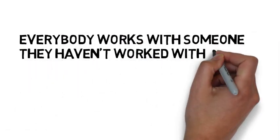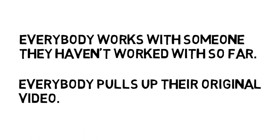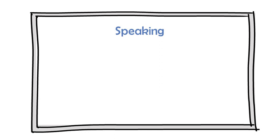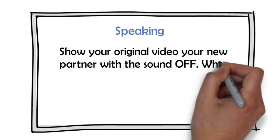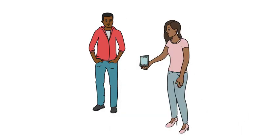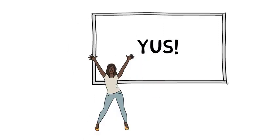Which comes next? Put students into new pairs so everybody is working with someone they haven't worked with in the lesson thus far, and send everybody back to their original video — the one they did the gist task and wrote comprehension questions for. Now, at this stage, everybody should be familiar with their own video and capable of recounting the main points. But we're going to help them do that with a visual cue, namely the video itself. So, on the board we write: show your original video to your new partner with the sound off. While the video is playing, explain its content to your partner. This will probably work better if you give students time to prepare what they're going to say about the video, but higher level students might be able to do it on the fly. In any case, once that's done, we've completed a full zero prep listening lesson using authentic materials to match the interests of everyone in the room.